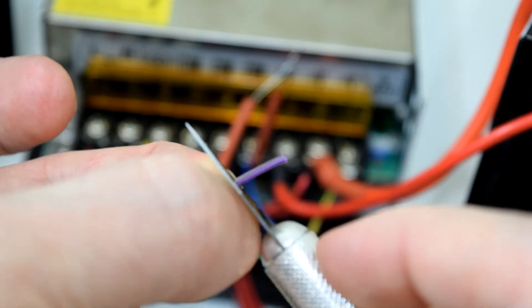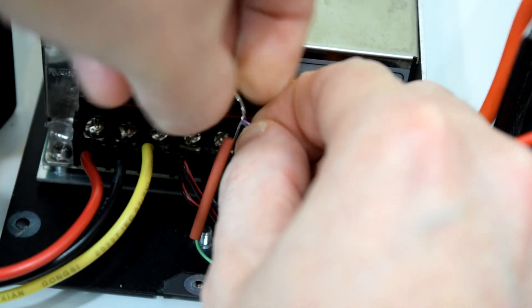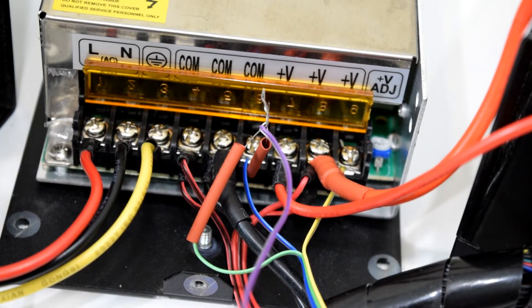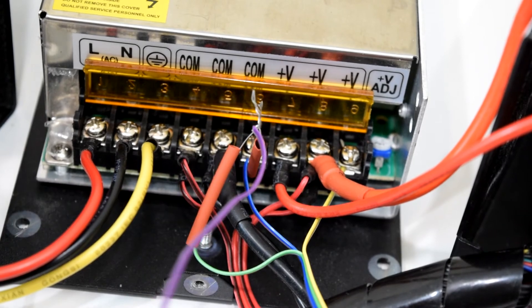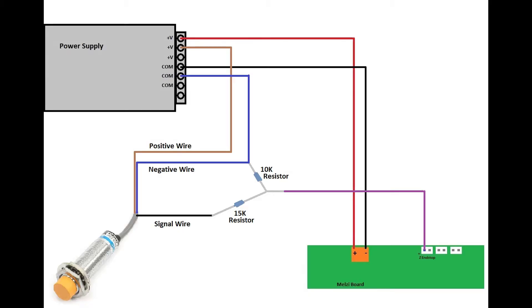Now you're going to connect the shorter length of wire I mentioned earlier to the middle of where the two resistors are attached together and that wire is going to be your new signal wire. Here's a diagram of the way all of these wires should be connected at this point.